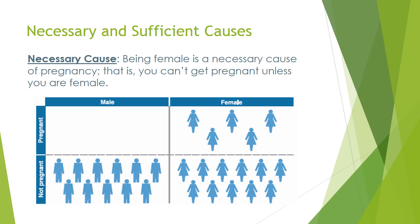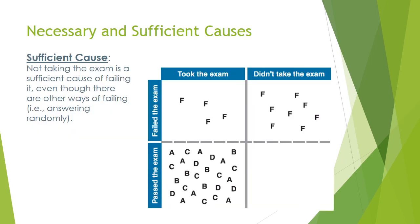Necessary cause example: being female is a necessary cause of pregnancy — you cannot get pregnant unless you are female. There are four categories: male pregnant, female pregnant, male not pregnant, female not pregnant. In order to be pregnant, you have to be female — that is a necessary cause. Sufficient cause example: not taking the exam is a sufficient cause of failing, even though there are other ways you can fail — you could answer randomly, or just not do well despite studying.